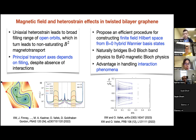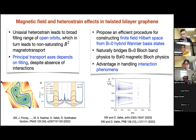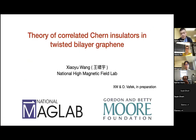The second part is the magnetic field effect, in which we, on the theoretical side, proposed a way of constructing the finite field Hilbert space from the zero field basis states. The advantage of this method is that it's very good at handling interaction phenomena, which is the focus of this talk. We are going to look at the theory of correlated Chern insulators in TBG.